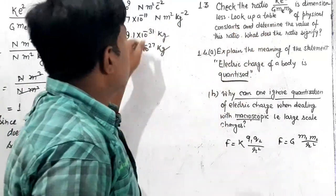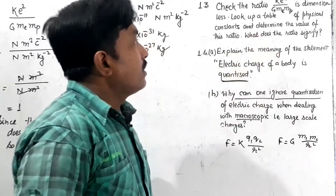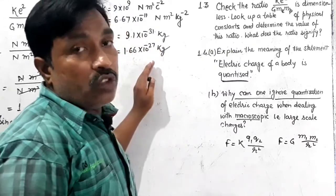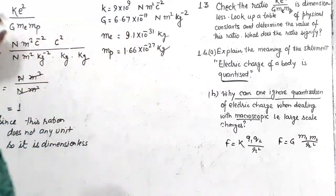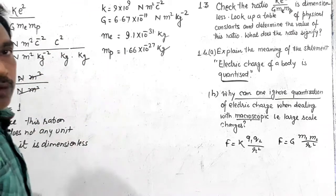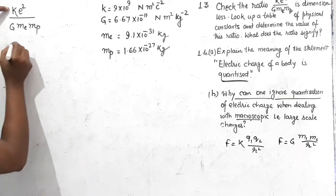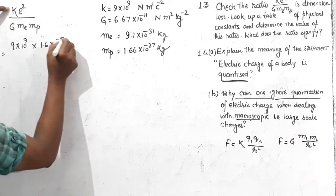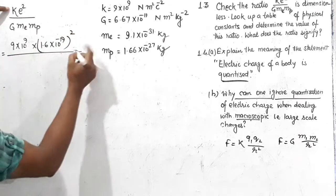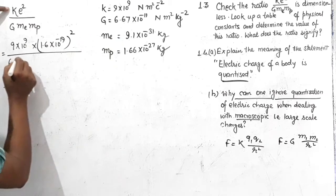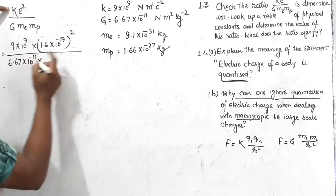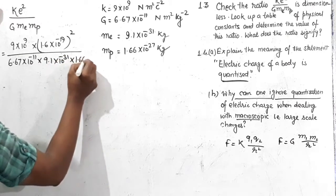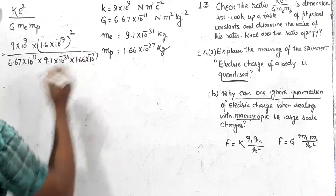Now let us look at the table of physical constants and determine the actual numerical value of this ratio. We put in: K = 9×10⁹, e = 1.6×10⁻¹⁹ Coulomb (squared), G = 6.67×10⁻¹¹, me = 9.1×10⁻³¹, and mp = 1.66×10⁻²⁷.